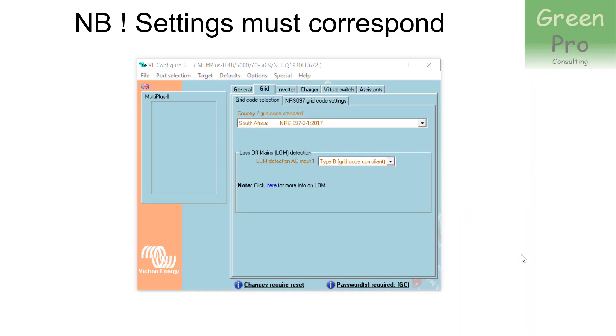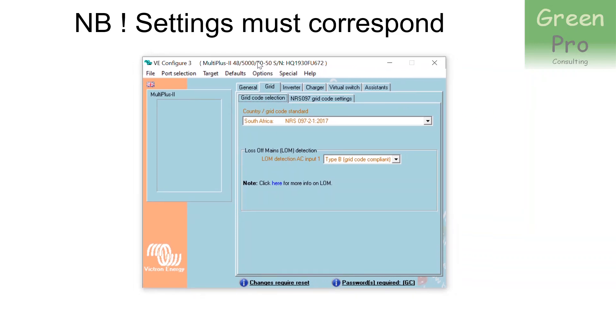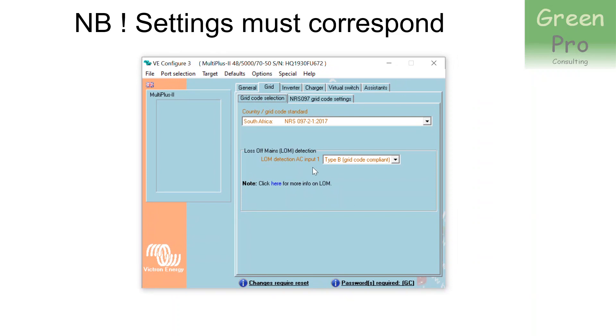Now, the way you do it is in VE Configure 3. Just for anybody watching, if you don't know what VE Configure 3 is, just take note of what we're trying to achieve here. But don't go and scratch around in that because there you can do damage to the inverter. And you probably also do not have the passwords that you need to change the grid code. And if you don't know enough, don't get the passwords if you can get them somewhere. Normally, you have to do a Victron course to get them. So don't get the passcodes and don't scratch around here because this is where you can blow up your inverter. So if you don't know what you're doing, stay away.